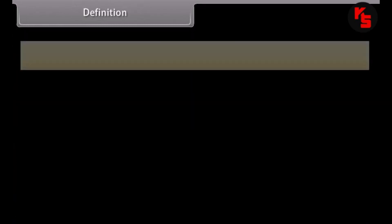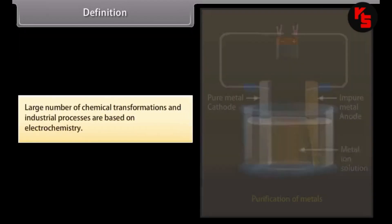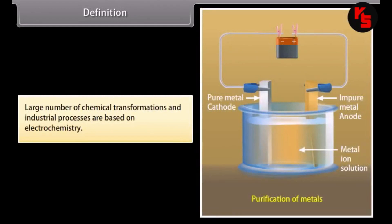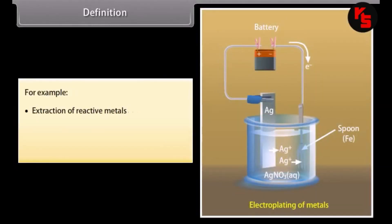Definition. The branch of chemistry which deals with the study of the relationship between electrical energy and chemical energy, and the interconversion of one form of energy into another, is called electrochemistry. A large number of chemical transformations and industrial processes are based on electrochemistry — for example, extraction of reactive metals, purification of metals, and electroplating of metals.